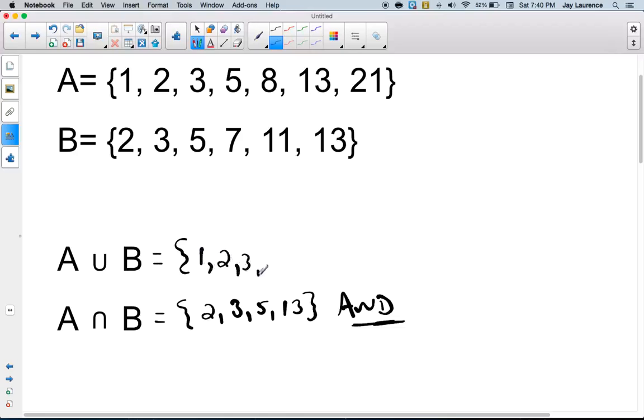3, 5, 7, 8, 11, 13, and 21. And so there's your union of A and B.